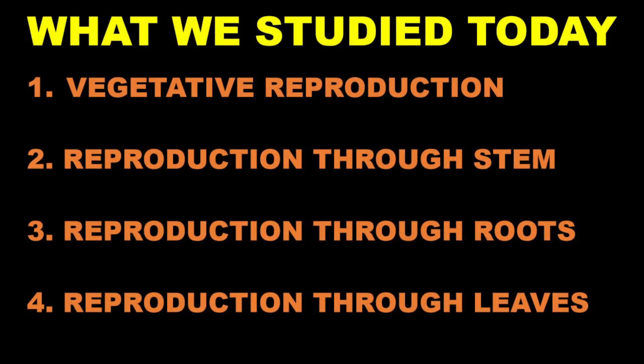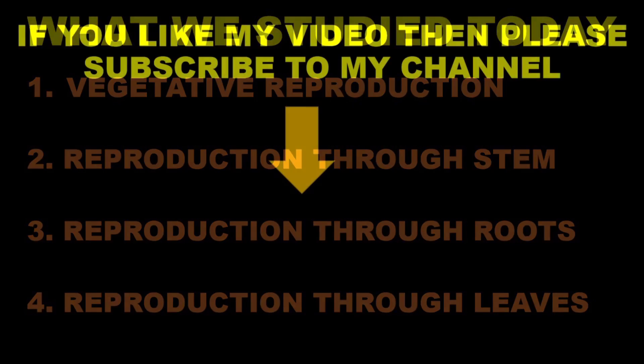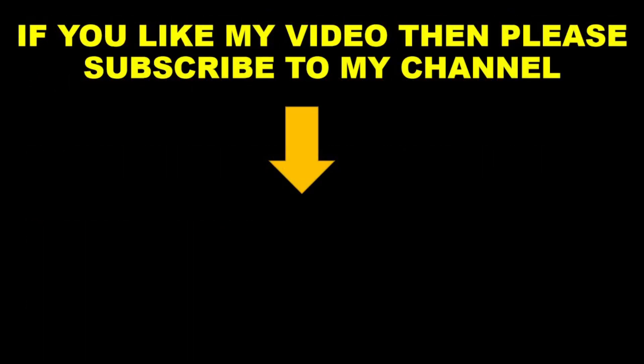So today we discussed vegetative reproduction — reproduction through underground stem, stem cutting, roots, and leaves. This was all for today. Please like and subscribe to the channel. Thank you, children.